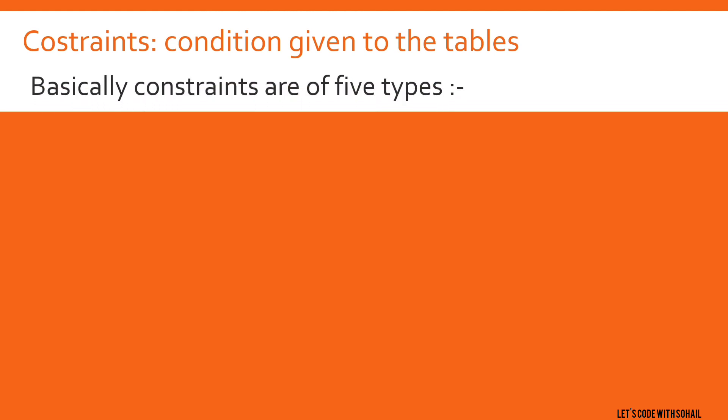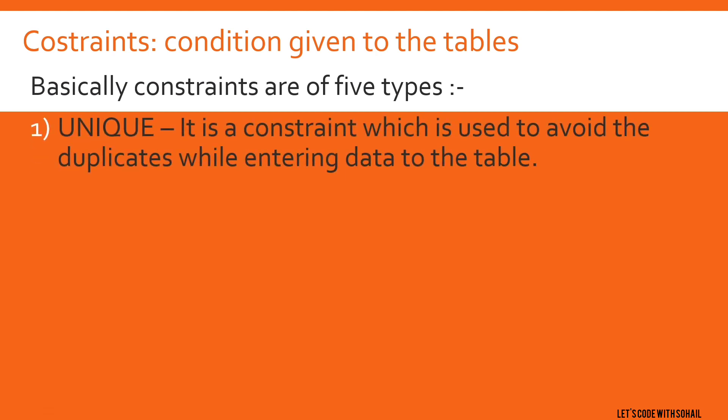Basically, constraints are of 5 types. The first is Unique. Unique is a constraint which is used to avoid duplicates when entering data into the table — all values must be unique.